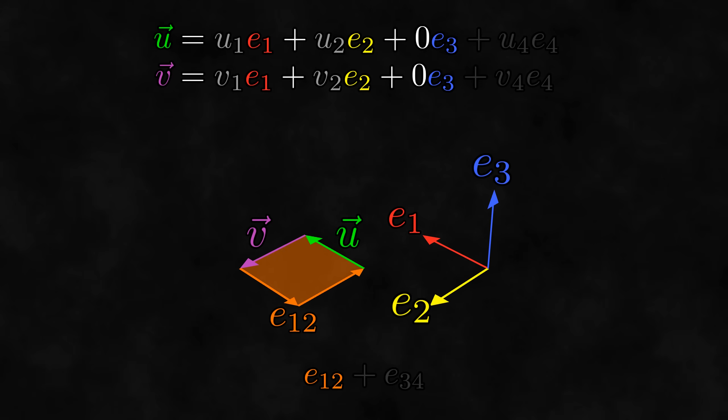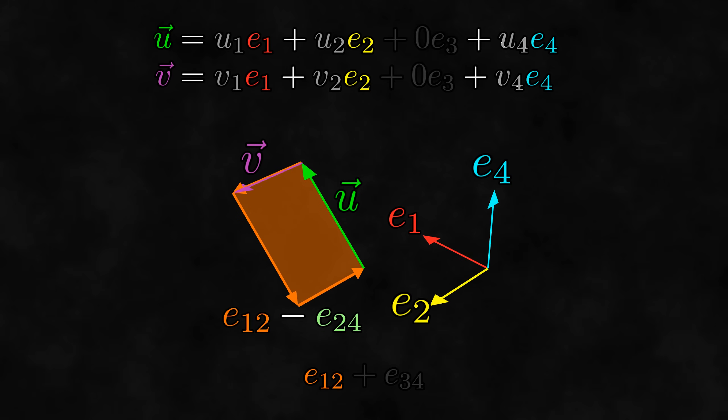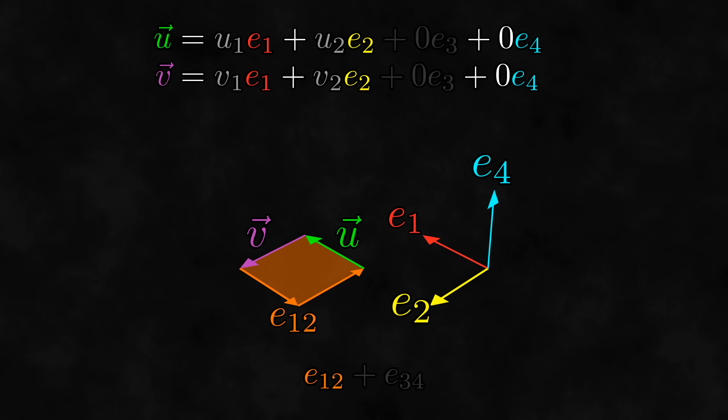Instead of looking at E1, E2, and E3, we could look at E1, E2, and E4. Again, from this view, the bivector is just E12 so it can't go in the E4 direction, so the E4 components of the vectors must be zero as well.